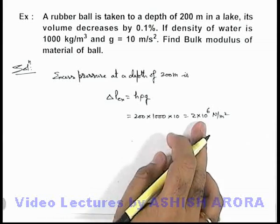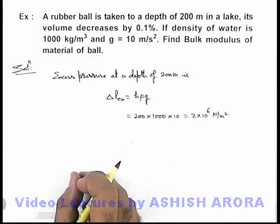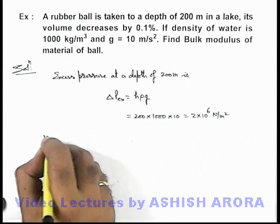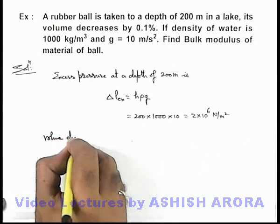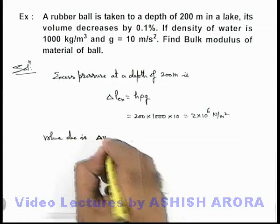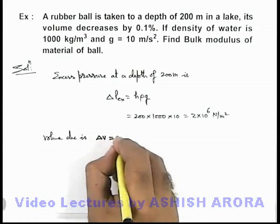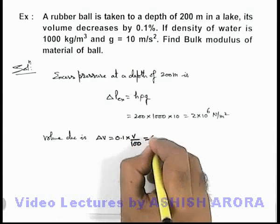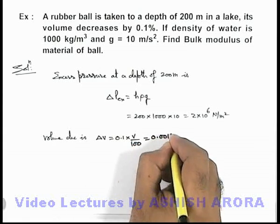Due to which the volume fraction is decreased by 0.1 percent. So here we can simply write volume decrease is delta V, which can be written as 0.1 multiplied by V by 100, which can be written as 0.001 V.